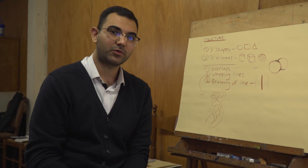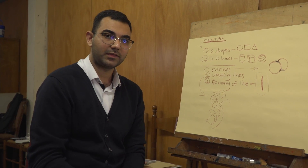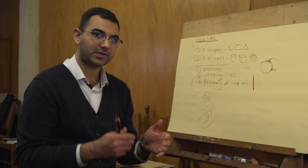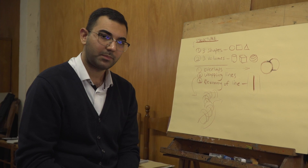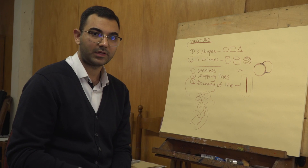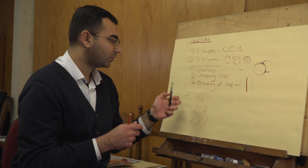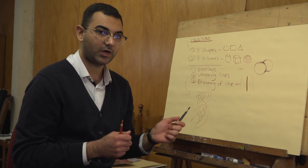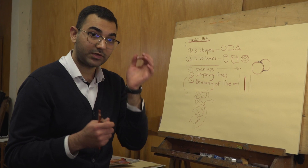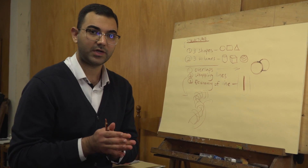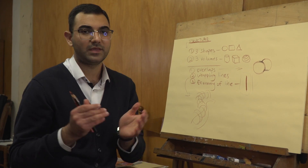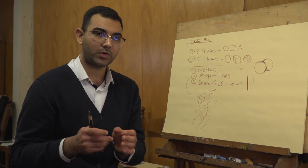I want you to be more conscious of the choices that you make, and you will be more conscious once you have the knowledge. When you know all these ways, you can choose which one is going to work better for you. It's not necessary to use all of them at once — you can choose just overlaps or just economy of line, or mix them all together. It's like design: we have three important elements — line, mass, and form — and you can mix and play with them.